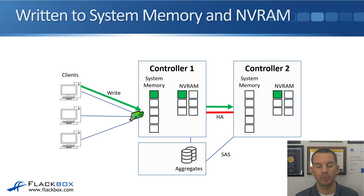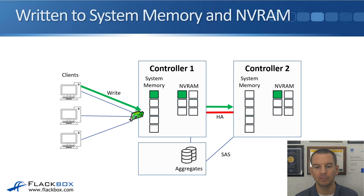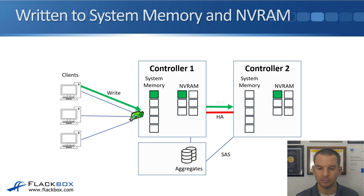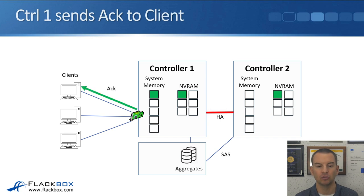In the example, the write request hits a network card on Controller 1, and it has been written to its system memory and NVRAM. It then mirrors that NVRAM information over to Controller 2 over the high-availability connection. Once that has been written into NVRAM on Controller 2, Controller 2 will send an acknowledgement back to Controller 1, and then Controller 1 will send the acknowledgement back to the client.